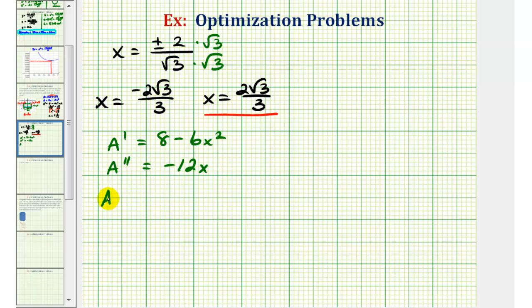So notice A double prime of positive 2 square root 3 divided by 3 would actually be negative or less than 0. Which means that x equals 2 square root 3 divided by 3, the function is concave down. Which is good news because that means we have a maximum when x equals 2 square root 3 divided by 3.